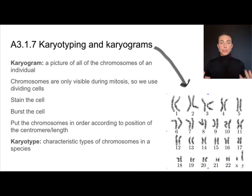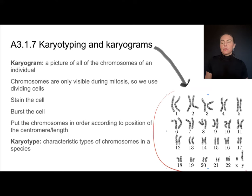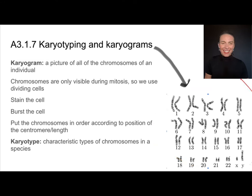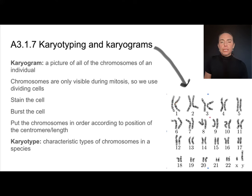Then I'm going to burst the cell. Cells don't arrange their chromosomes in such nice, neat little pictures — they're kind of a mess. We need to put the chromosomes in order according to the position of the centromere. That's this little thing here; if these were replicated, that would hold them together. And basically this ends up organizing them in order from length.